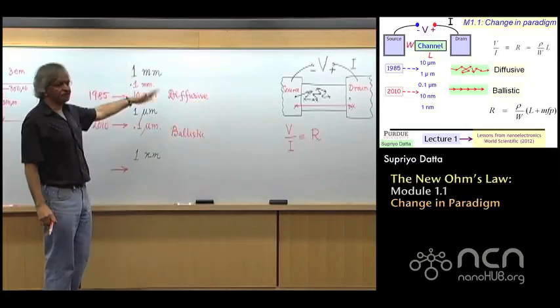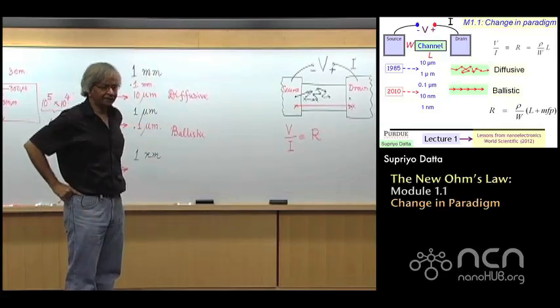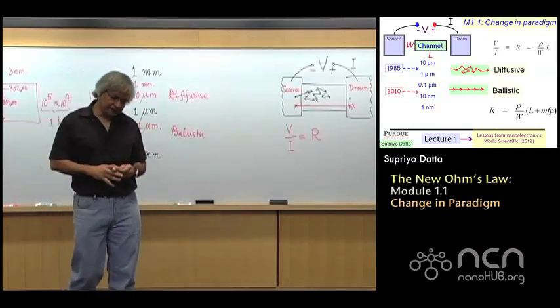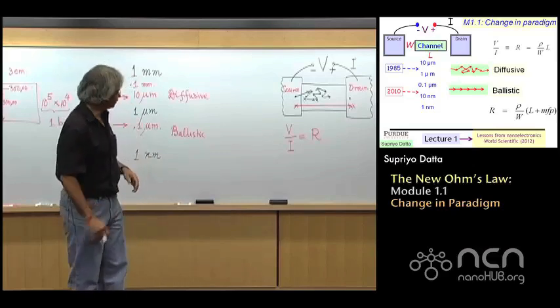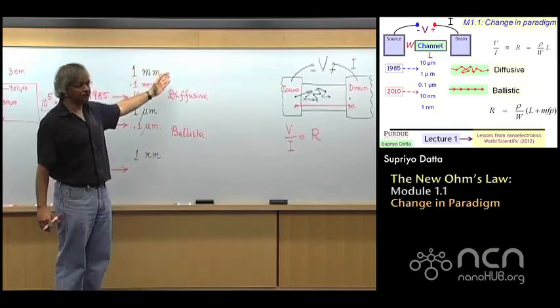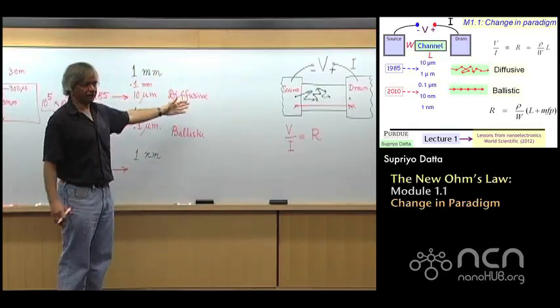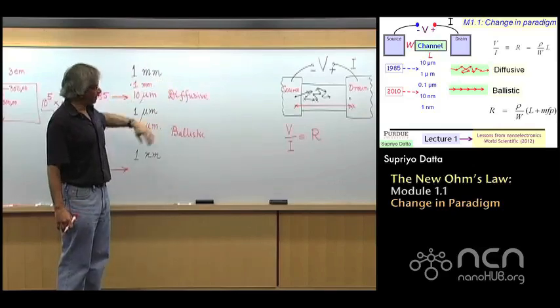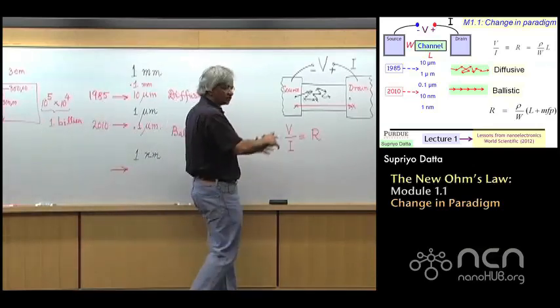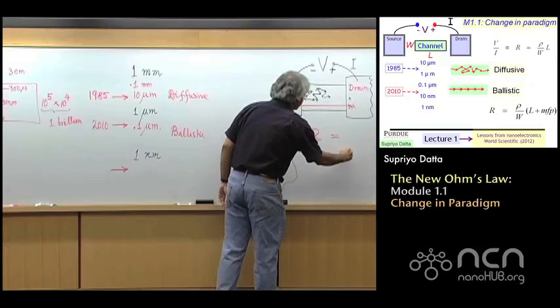So, this is the change in paradigm that I have referred to in this module 1.1. The title, we called it Change in Paradigm, is this idea that our entire understanding and thinking of current flow is based on this diffusive regime. Why? Because 25 years ago, that's the only regime people knew much about. In other words, they had all the experiments that were available were all in this regime.